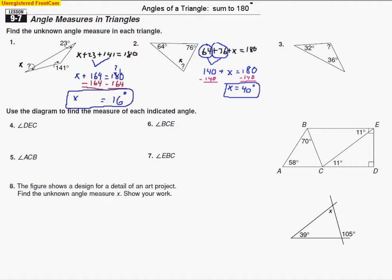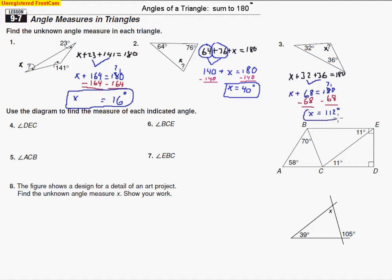Looking at the next one, we've got to combine all the angles together. We'll call this one x — that's the one we're trying to find. So x plus 32 plus 36 — all those angles together make 180 degrees. We collect those two terms and get x plus 68 equals 180. The two angles together sum to 68; take that away from 180, and after borrowing, we end up with 112 degrees as the answer for number 3.